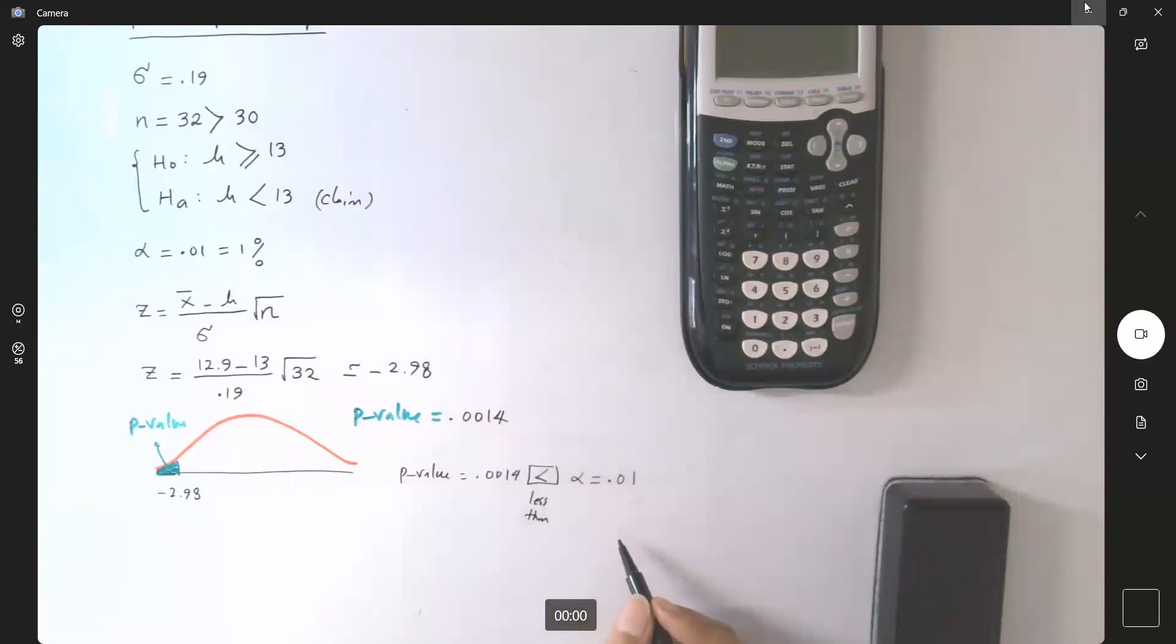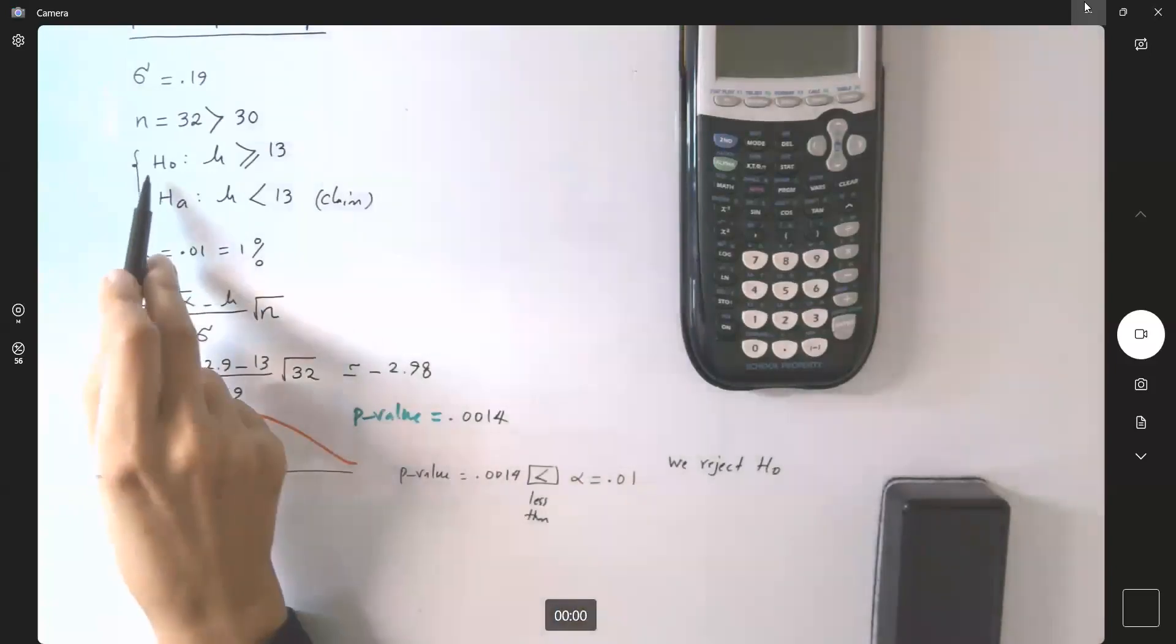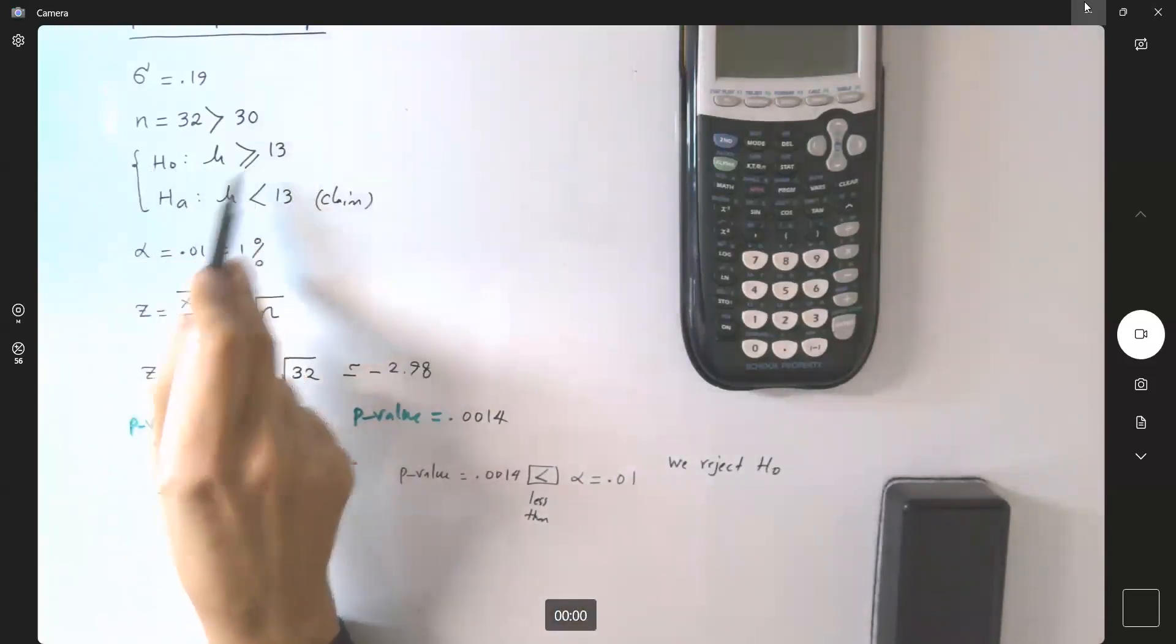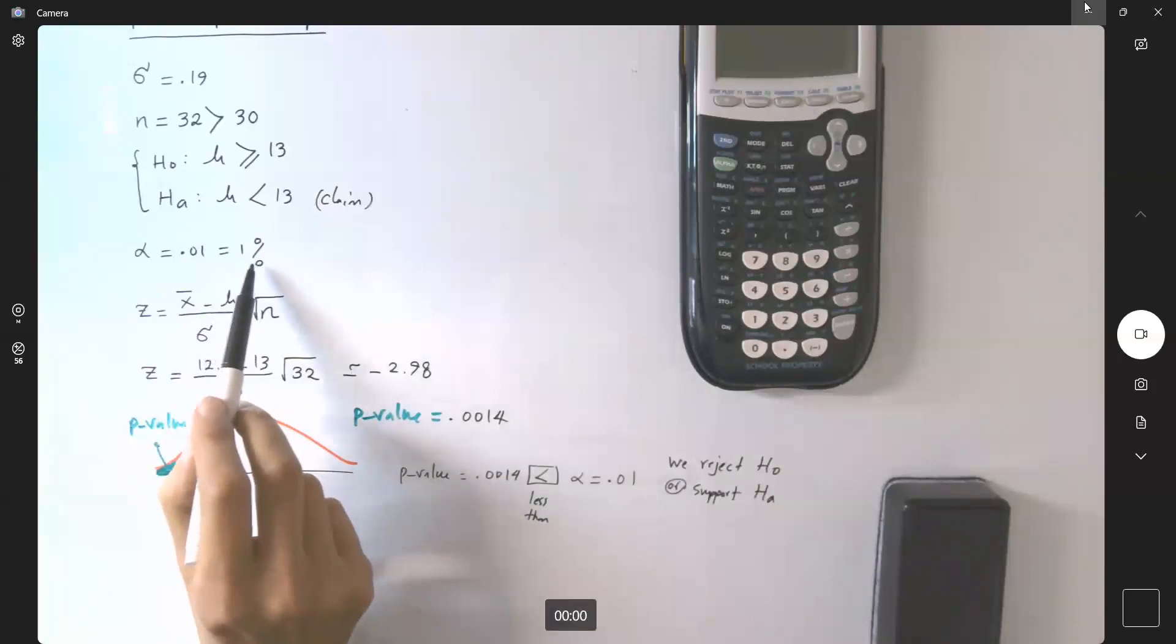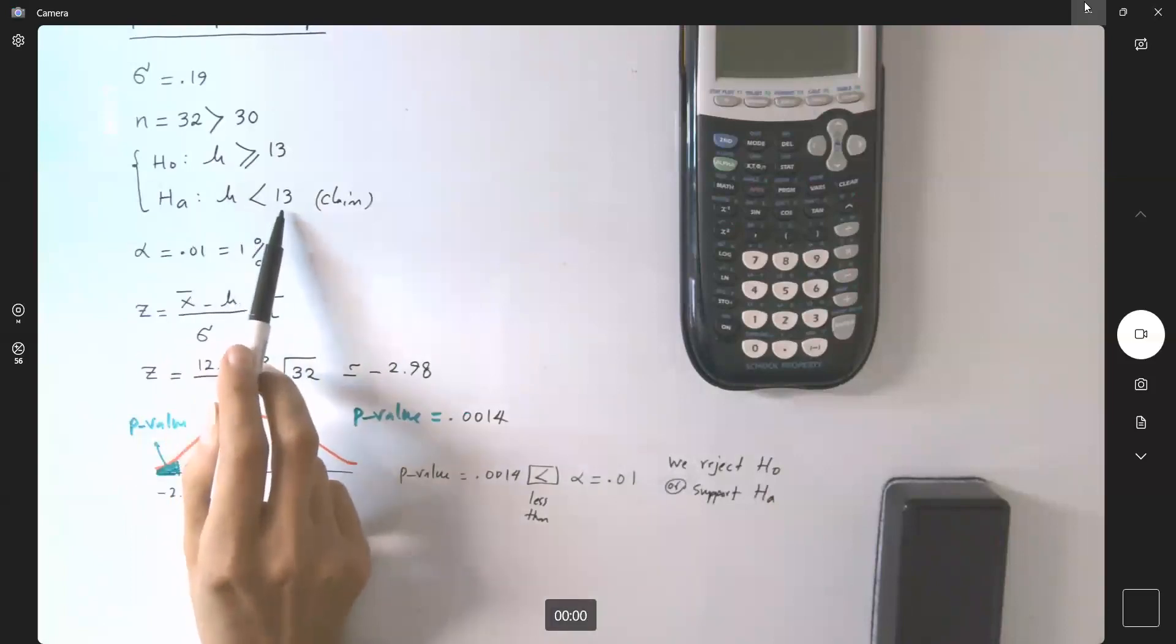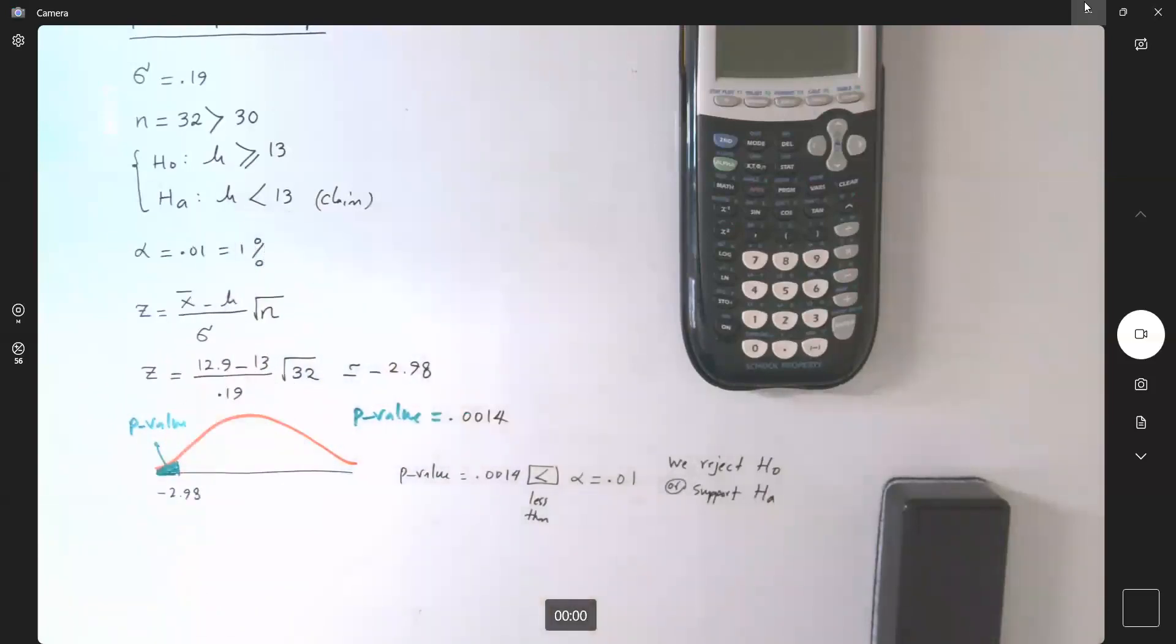We reject the null hypothesis. It means that we support the alternative hypothesis or support alternative hypothesis. So at 1% level of significance, we support the claim that the mean is less than 13 seconds.